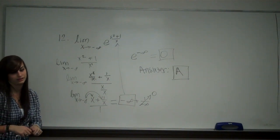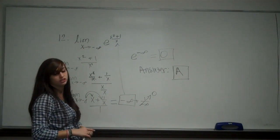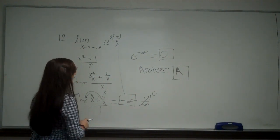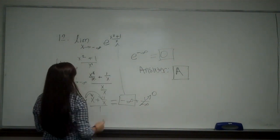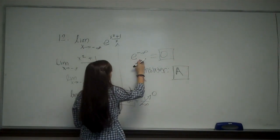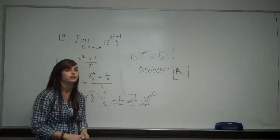Now be careful not to mark that as an answer because that's also choice B. You want to make sure that you plug back into your original. So e to the negative infinity is going to be 0.